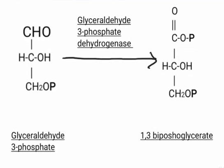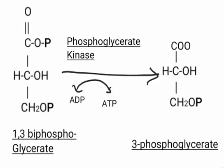From here starts the energy generation phase, where glyceraldehyde-3-phosphate in the presence of the enzyme glyceraldehyde-3-phosphate dehydrogenase gets converted into 1,3-bisphosphoglycerate. Then 1,3-bisphosphoglycerate in the presence of the enzyme phosphoglycerate kinase gets converted into 3-phosphoglycerate. Here one phosphate molecule is liberated which combines with ADP and forms ATP, thus energy is liberated.